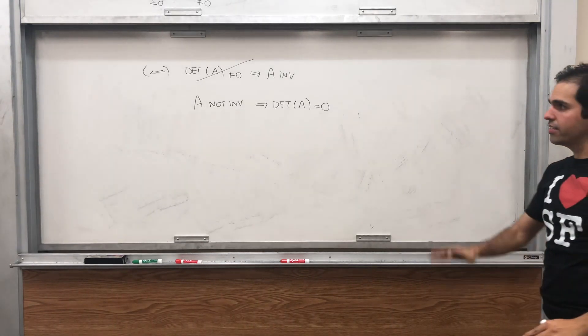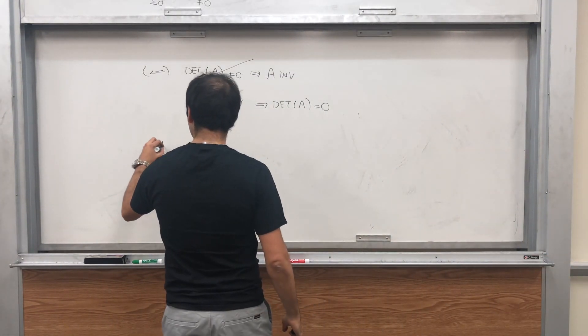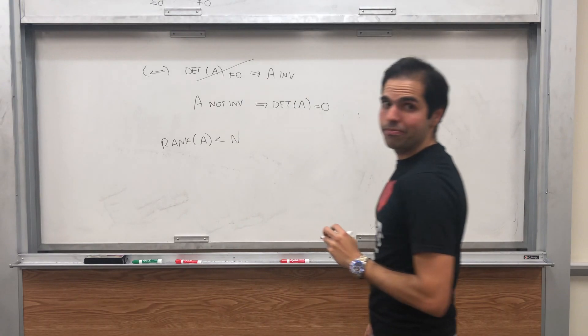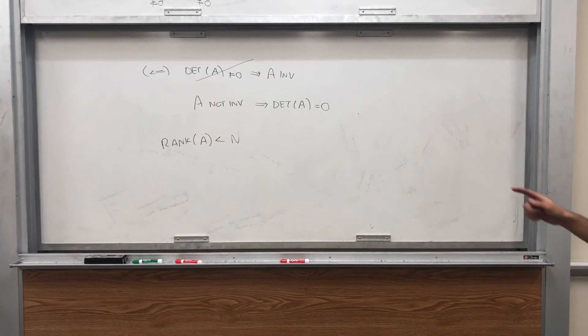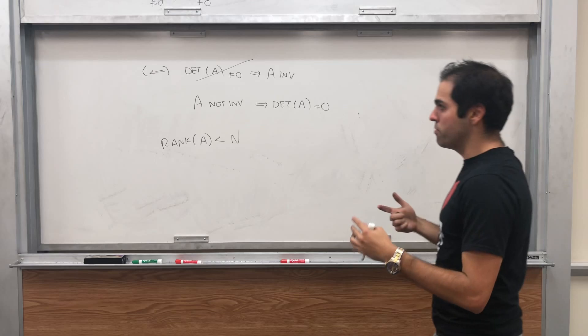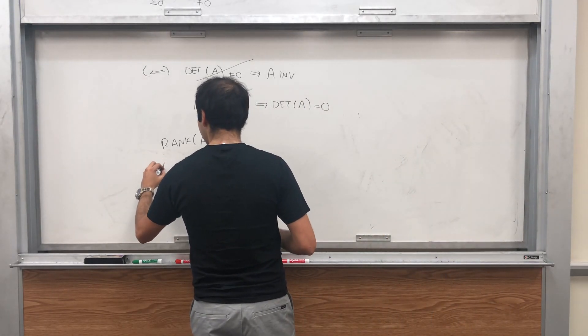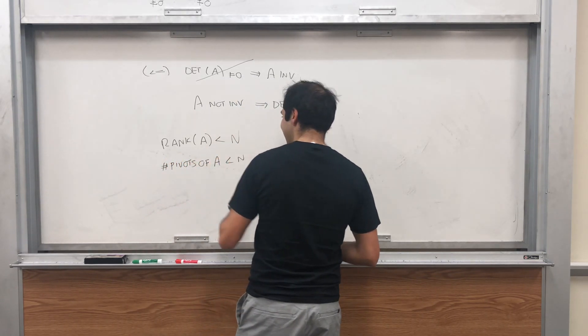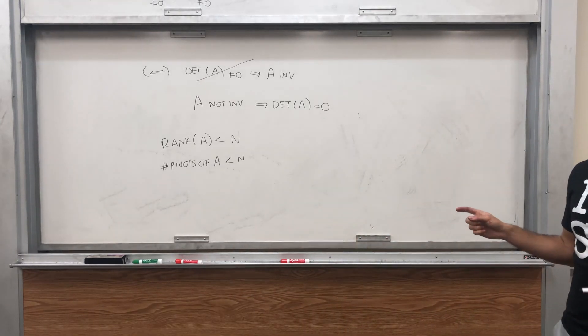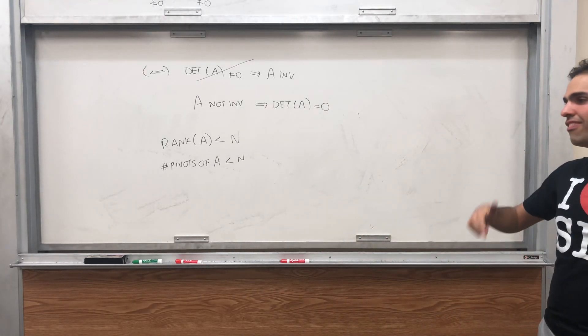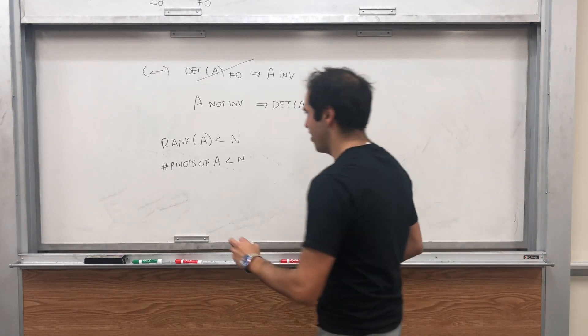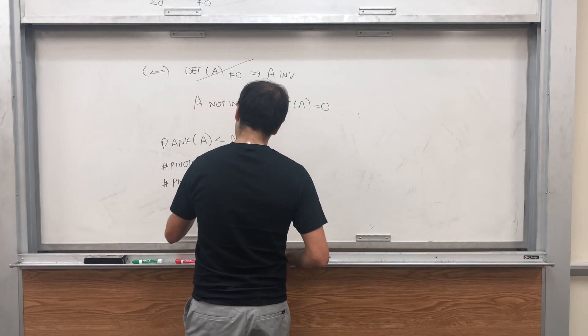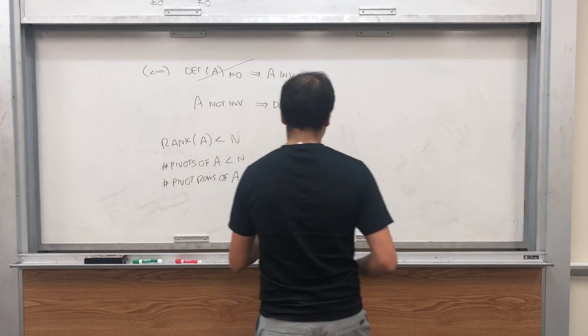All right. You have a square matrix that is non-invertible. So in particular, the rank of A is strictly less than N. And what does that mean? It means that in terms of pivots, the number of pivots of A is less than N. And in particular, A doesn't have as many pivot rows as possible. So the number of pivot rows of A is less than N.